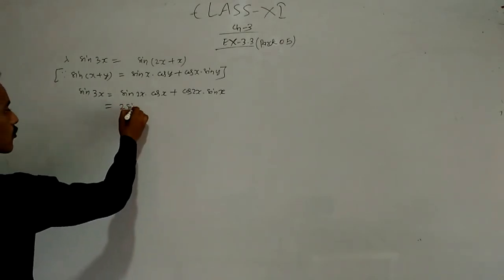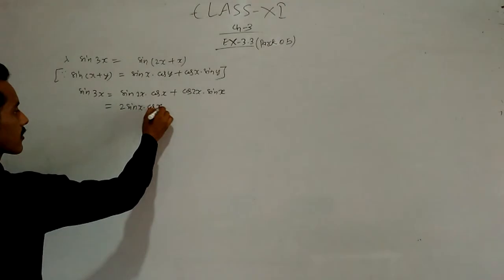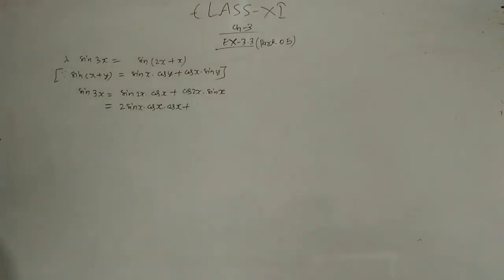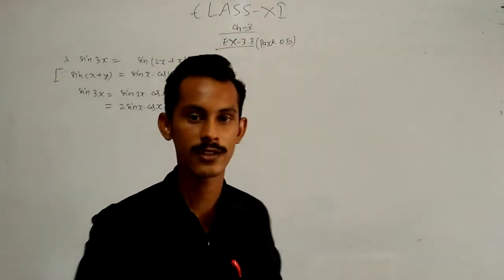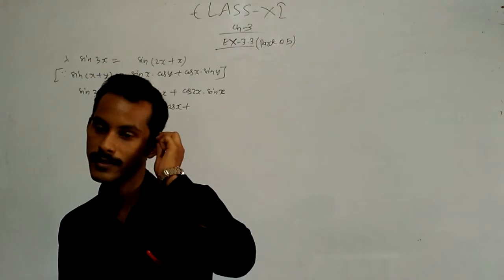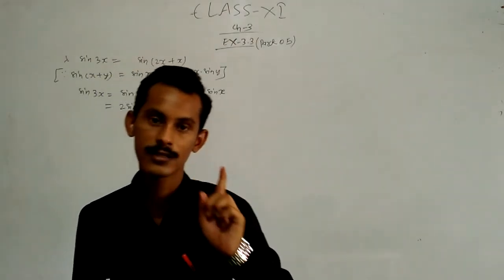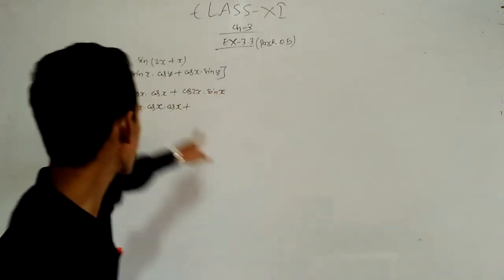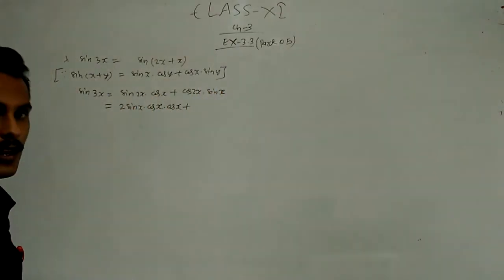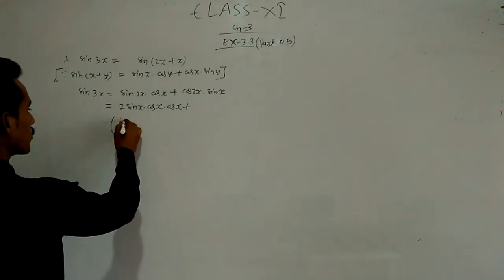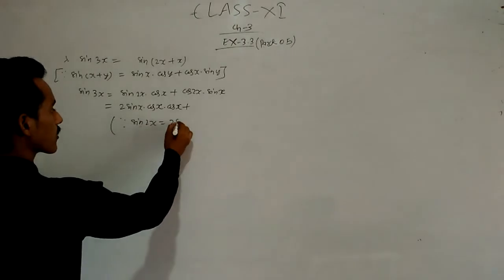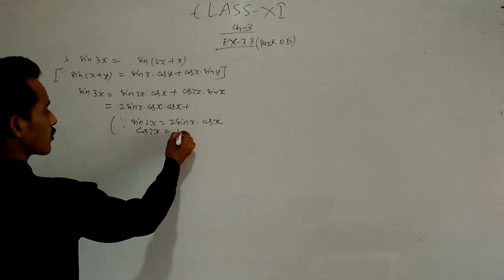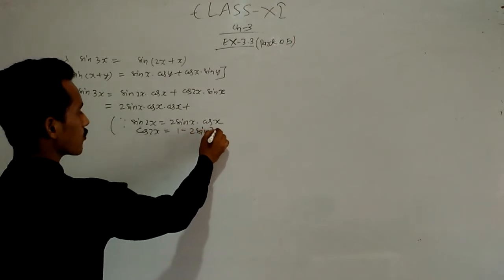Now sin 2x = 2 sin x · cos x. For cos 2x, there are three identities: cos²x − sin²x, or 1 − 2sin²x, or 2cos²x − 1. Here we substitute sin 2x = 2 sin x cos x, and for cos 2x we use 1 − 2sin²x.